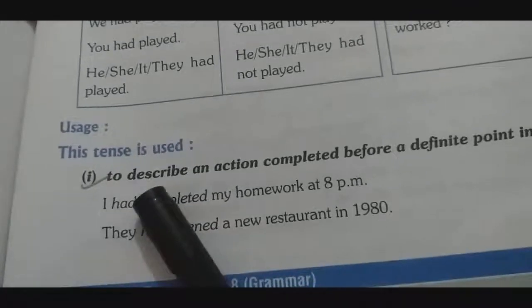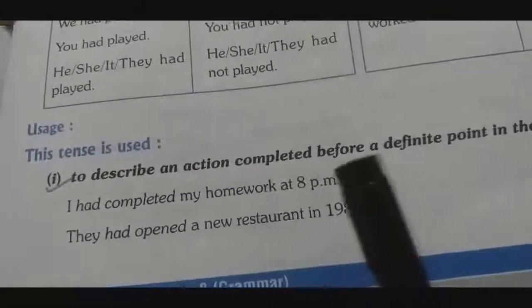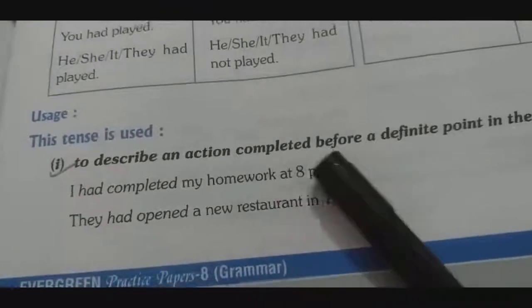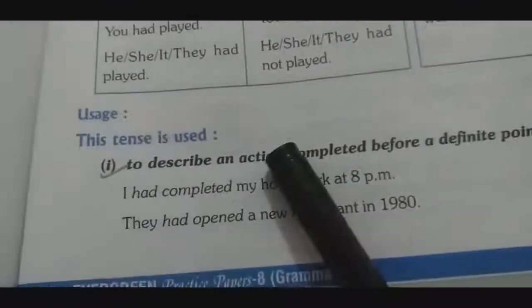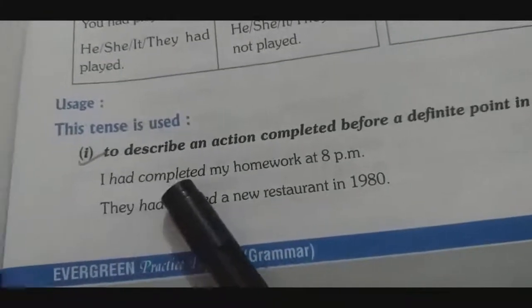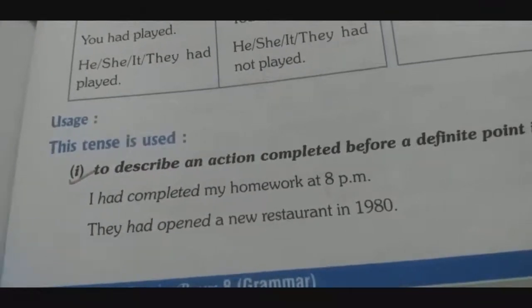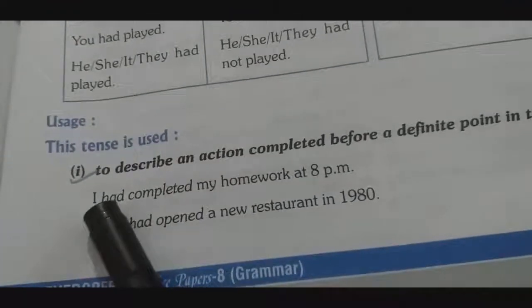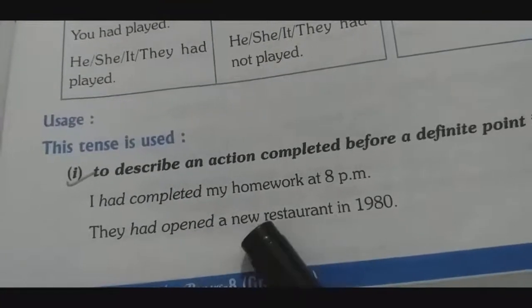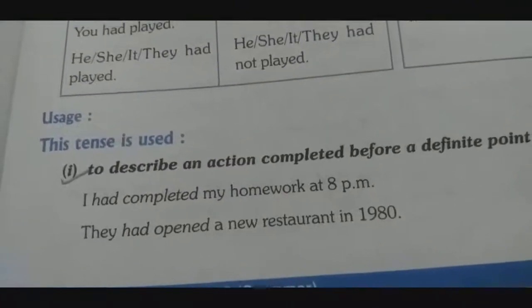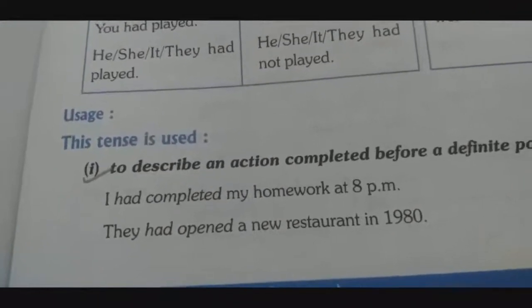Past perfect tense is used to describe an action completed before a definite point in the past. Example: 'I had completed my homework at 8 p.m.' — meaning before 8 p.m., I had already finished my homework. Example two: 'They had opened a new restaurant in 1980.' The action took place in the past and is completed at that definite point of time.